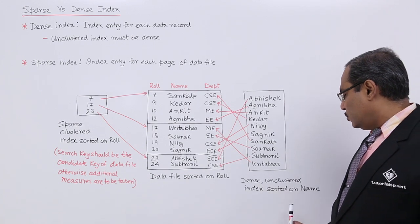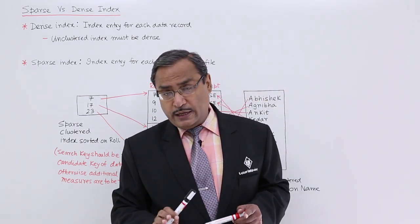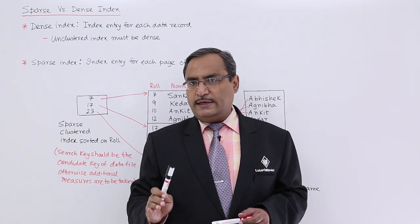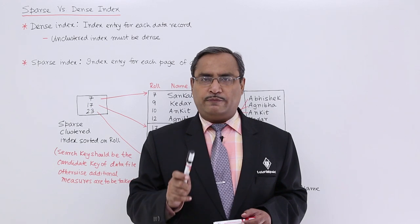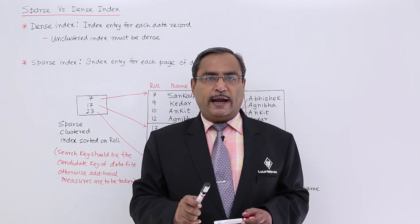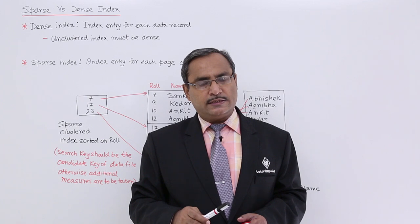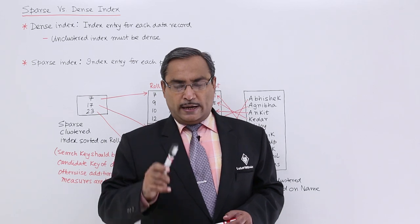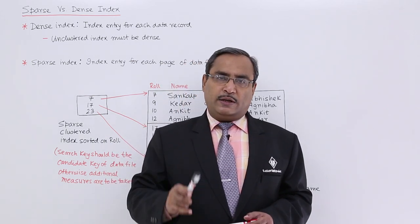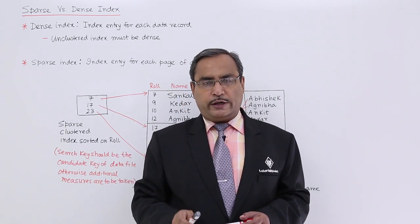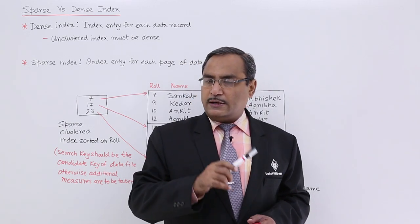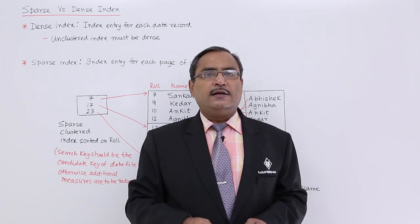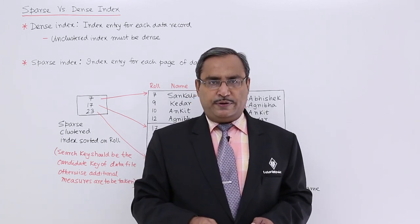That is the basic difference between dense index and sparse index. In case of sparse index, we point to the first record of each page, and the search key should be the candidate key, otherwise additional measures are needed. In case of dense index, we point to every record, and though the search key is sorted in the index, the tuples are not in that order in the data file — that is why dense indexing is required in that case. Thanks for watching.